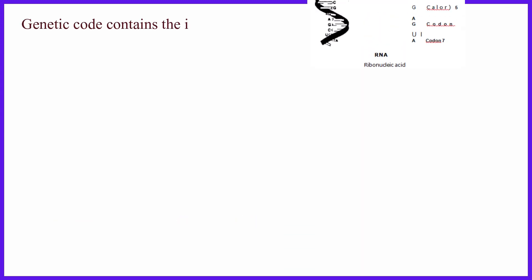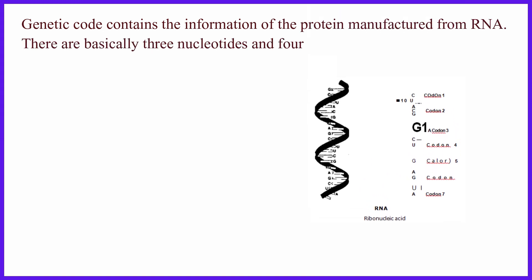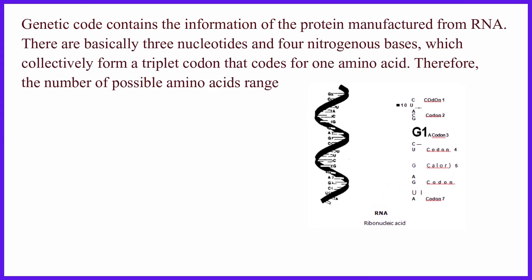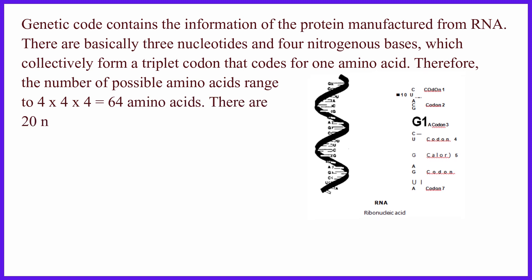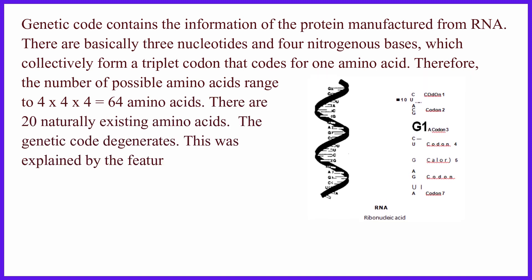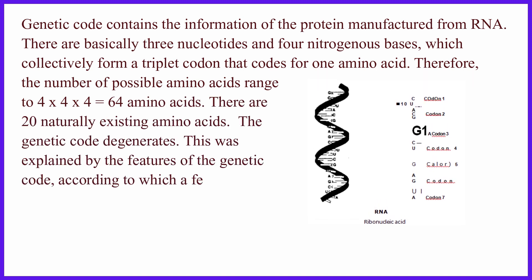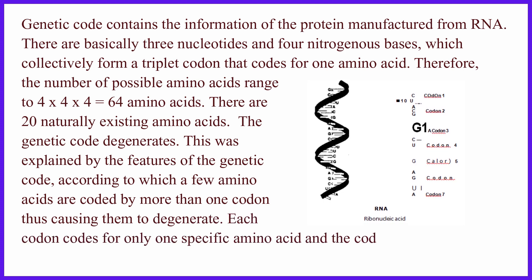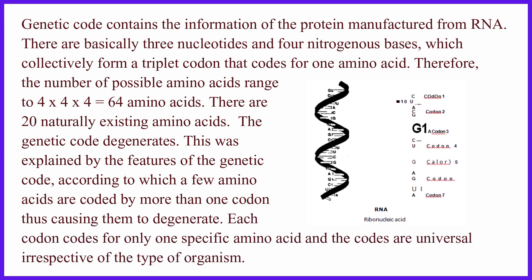Genetic code contains the information of the protein manufactured from RNA. There are basically three nucleotides and four nitrogenous bases, which collectively form a triplet codon that codes for one amino acid. Therefore, the number of possible amino acids ranges to 4 × 4 × 4 equals 64 amino acids.